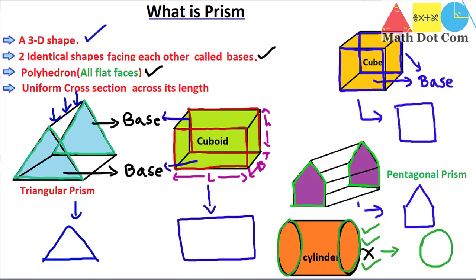So from today's lecture it is clear that for a prism we need these four properties, and a prism is not only a shape with a triangular base. It could be triangular, square, rectangular, pentagonal, hexagonal — any shape — as long as all four properties are fulfilled. Hope your concept regarding prism is cleared now. In our next lecture we will see how to find the surface area of a prism. Thank you.